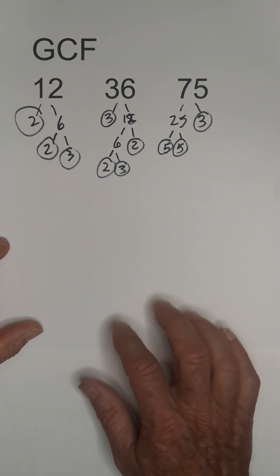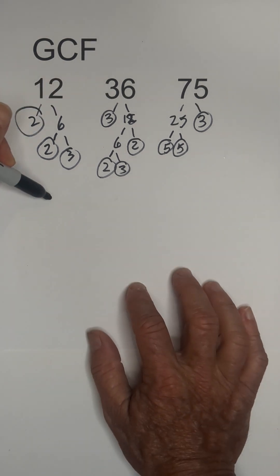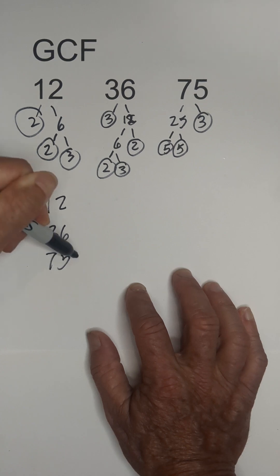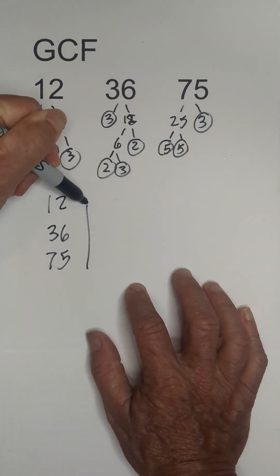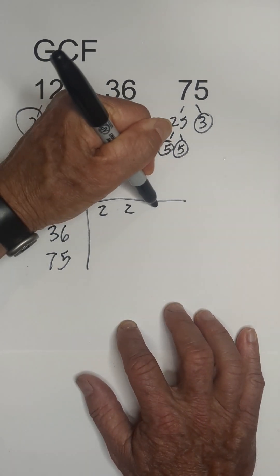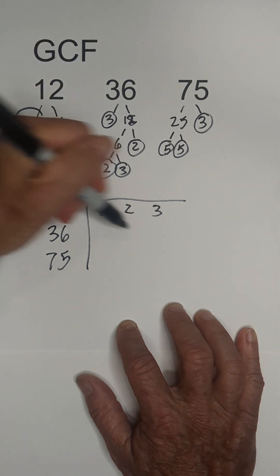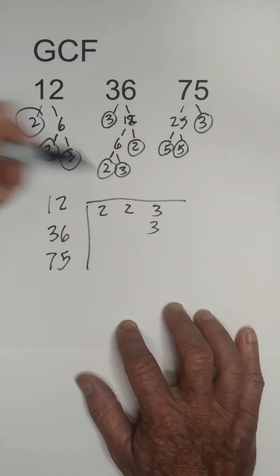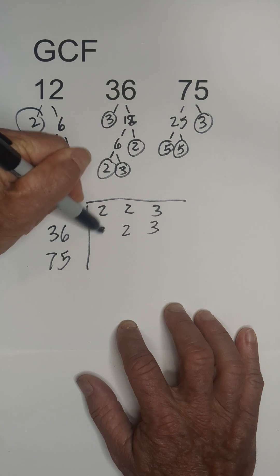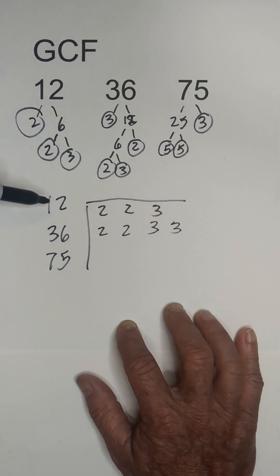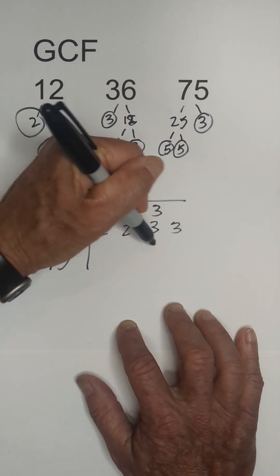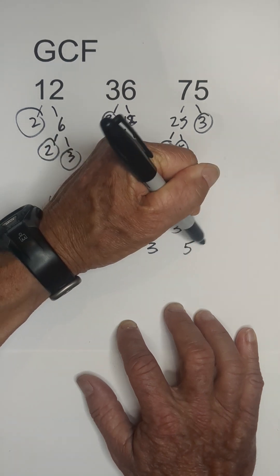I went ahead and did the factor trees. Now you can use a chart like this and place all the prime numbers in the chart. For 12 I have 2, 2, 3. For 36 I have 3, 2, 2, and another 3. And then for 75 I have a 3 and two 5s.